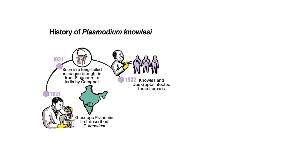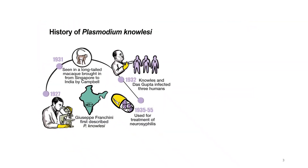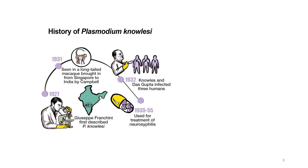In 1932, Knowles and Das Gupta successfully infected three human volunteers with knowlesi malaria. Between 1935 to 1955, P. knowlesi would go on to be used as a therapeutic agent for various diseases, particularly neurosyphilis.